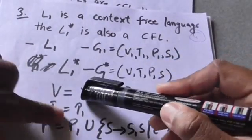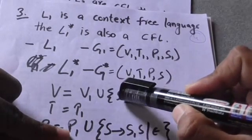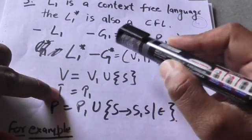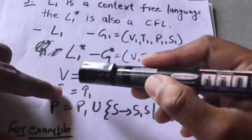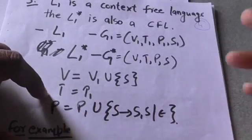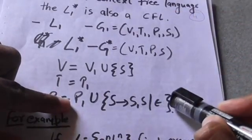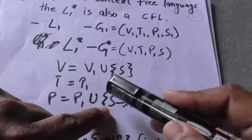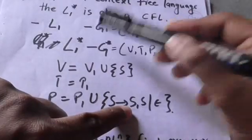Grammar G* will contain all variables of grammar G1, plus S which is the start symbol of G*. G* will contain all terminals of grammar G1, so T equals T1 — G* and G1 have the same terminals. G* will contain all productions of grammar G1, and also these productions: S derives S1 S, and S derives empty string, where S is the start symbol of G* and S1 is the start symbol of G1.